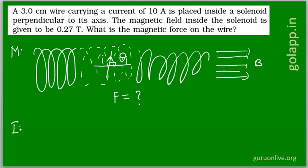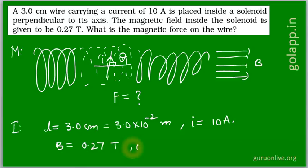Now I am going to investigate the given information. Length of the conductor is 3.0 centimeters, in SI system it is 3.0 × 10^-2 meters. The current flowing in it is I = 10 amperes. The magnetic field experienced by the conductor B = 0.27 tesla, and the angle between the current conductor and the field is 90 degrees.